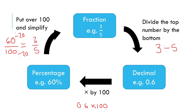This is a cycle we need to go through. However, we can go back the other way at one step. If we want to go back from a percentage to a decimal, we can just divide by 100. But apart from that, we need to follow this circle round.